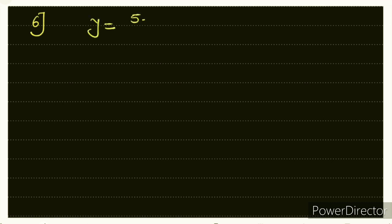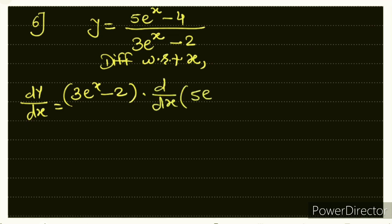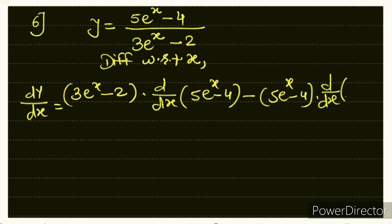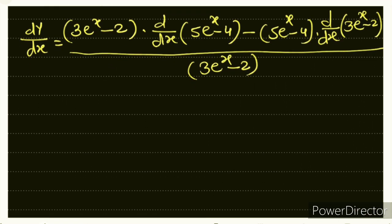Sum number 6: y = (5eˣ − 4) / (3eˣ − 2). Again pause the video and try yourself. Then let's check: dy/dx = [(3eˣ − 2)·d/dx(5eˣ − 4) − (5eˣ − 4)·d/dx(3eˣ − 2)] / (3eˣ − 2)². Don't skip the first formula-writing step — it makes the process easier.